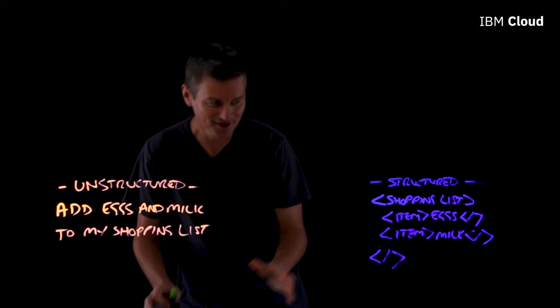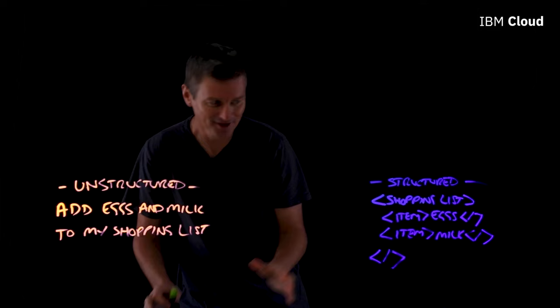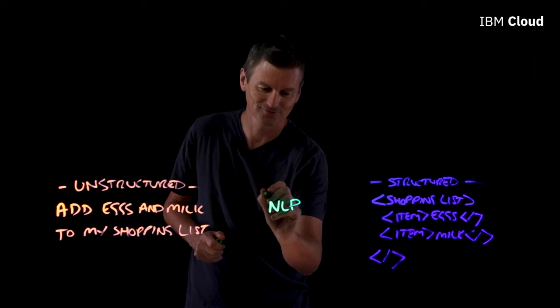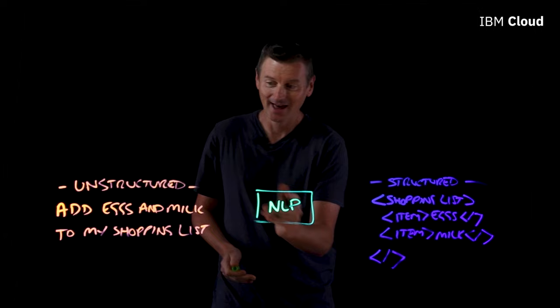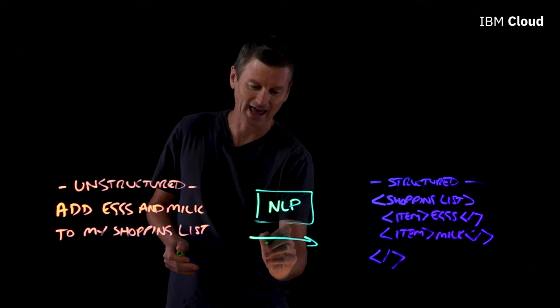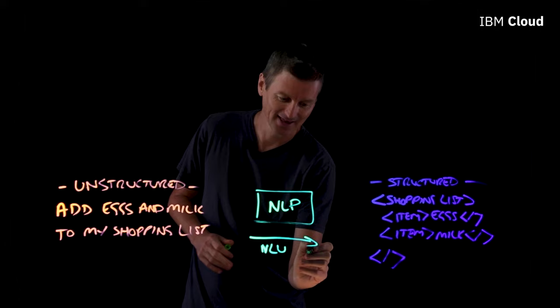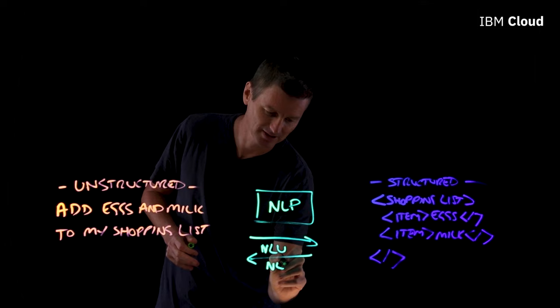The job of natural language processing is to translate between these two things. NLP sits right in the middle, translating between unstructured and structured data. When we go from unstructured to structured, that's called NLU or natural language understanding. And when we go from structured to unstructured, that's called natural language generation or NLG.